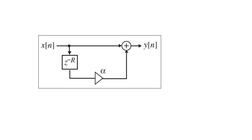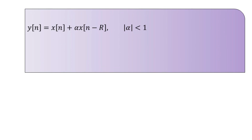Let us first study echo generation. There is first the single echo filter. Echoes — the repetition of sound — are simply generated by delay units. Here we have the direct sound and a single echo appearing capital R times sampling periods apart, which can be simply generated by an FIR filter as shown in this illustration. Capital R is the delay parameter. The FIR filter is characterized by the difference equation: y(n) = x(n) + α·x(n − R), where |α| < 1.